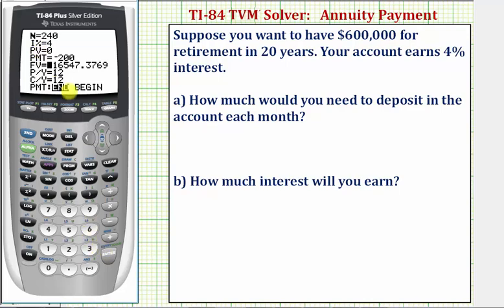Next is the future value, which we want to be equal to $600,000, so we enter 600,000 and press Enter. We're making monthly payments, so payments per year is 12. We're also assuming the interest is compounded monthly, so the compounds per year would also be 12.